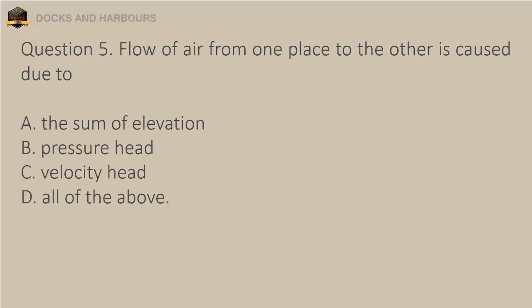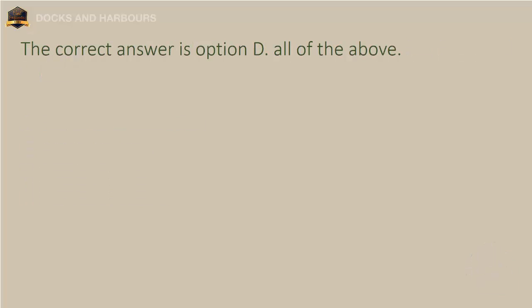Question 5. Flow of air from one place to the other is caused due to: a. The sum of elevation, b. Pressure head, c. Velocity head, d. All of the above. The correct answer is option D: All of the above.